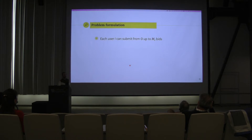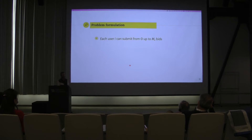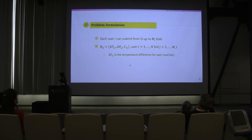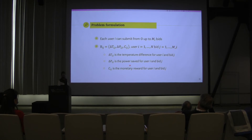Each user can submit from zero up to nine bids. Zero bids would be the case where they don't want to participate in this program. If they do want to participate, they can submit as many options as they want. A bid is basically a triplet of values: delta T, which is how many degrees of change they would set in their thermostat; delta B, which is the power saving due to this change; and C, which is the monetary compensation that they ask for.